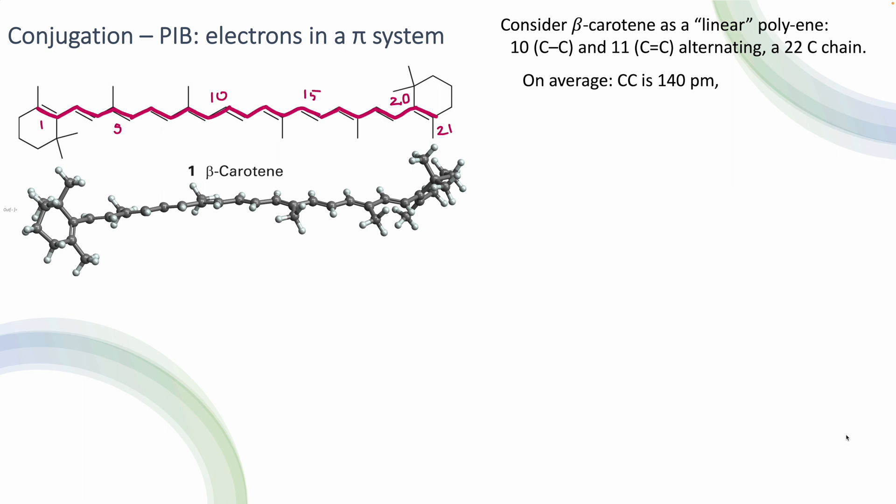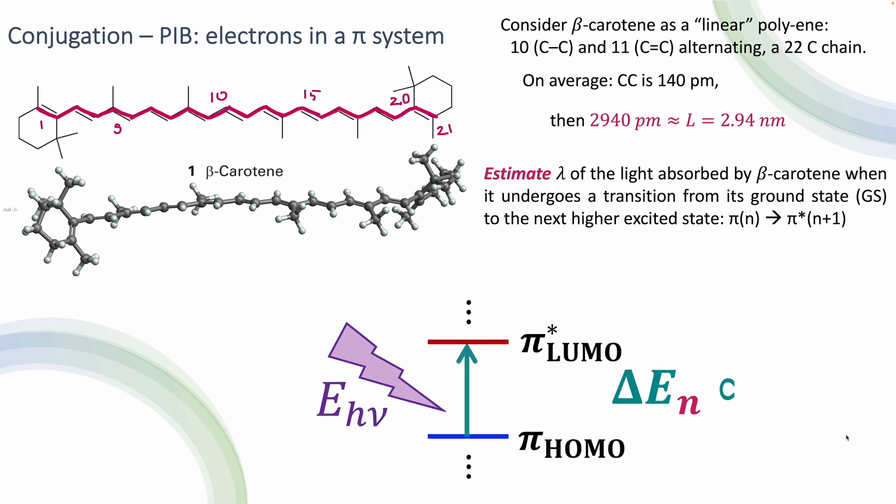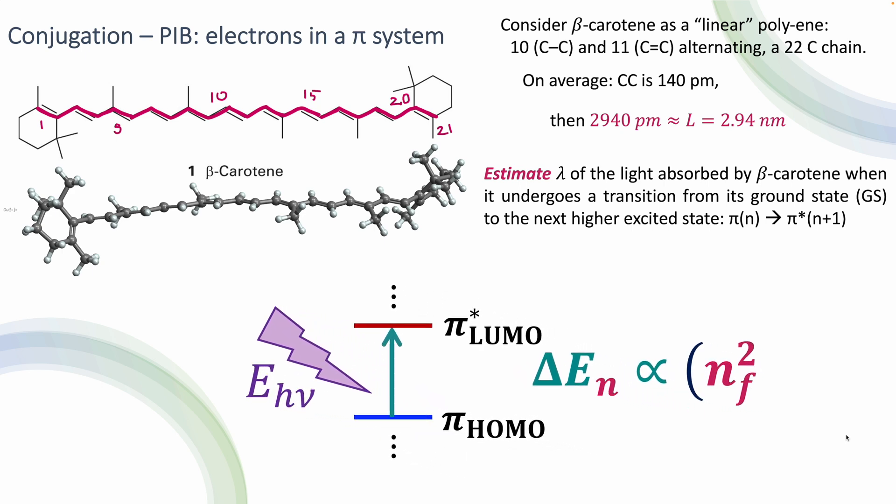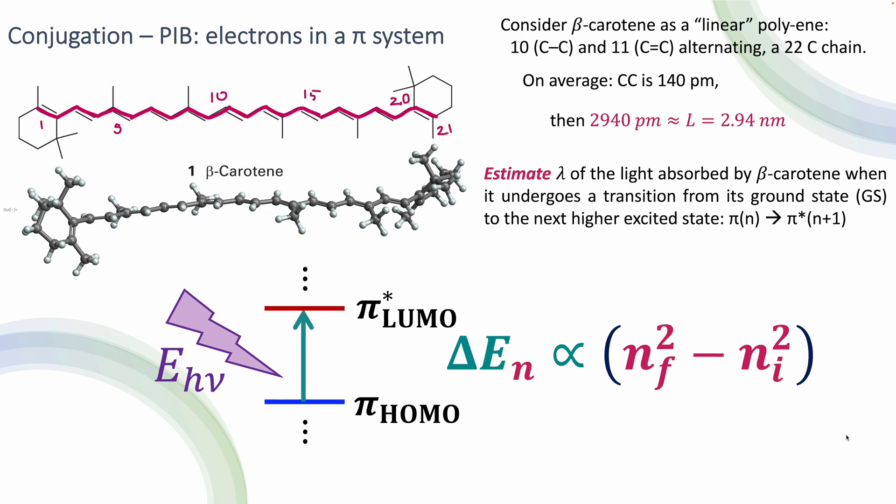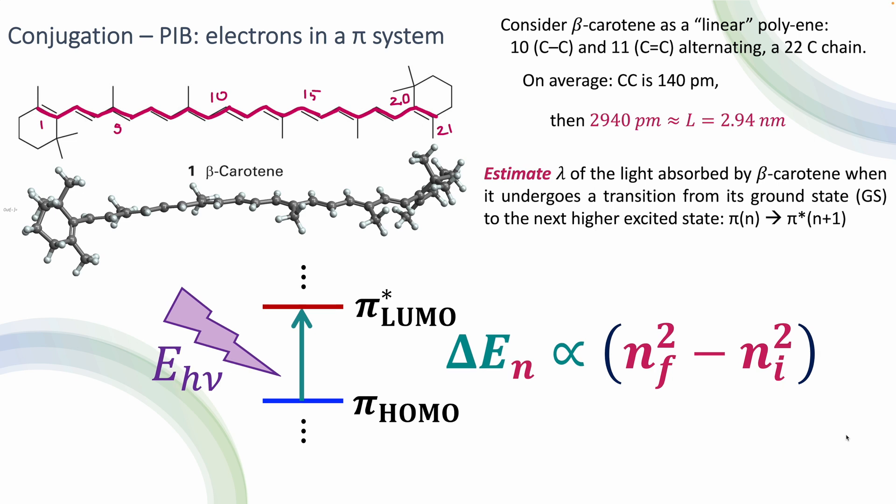And again, if we consider an average that every carbon-carbon bond is 140 picometers, that's going to give me, with these 21 carbon-carbon bonds in this box, roughly a length of 2.94 nanometers. Now, the question is, we have to estimate what is the wavelength of the light that's being absorbed by this molecule whenever we have this transition from its ground state to the next higher excited state.